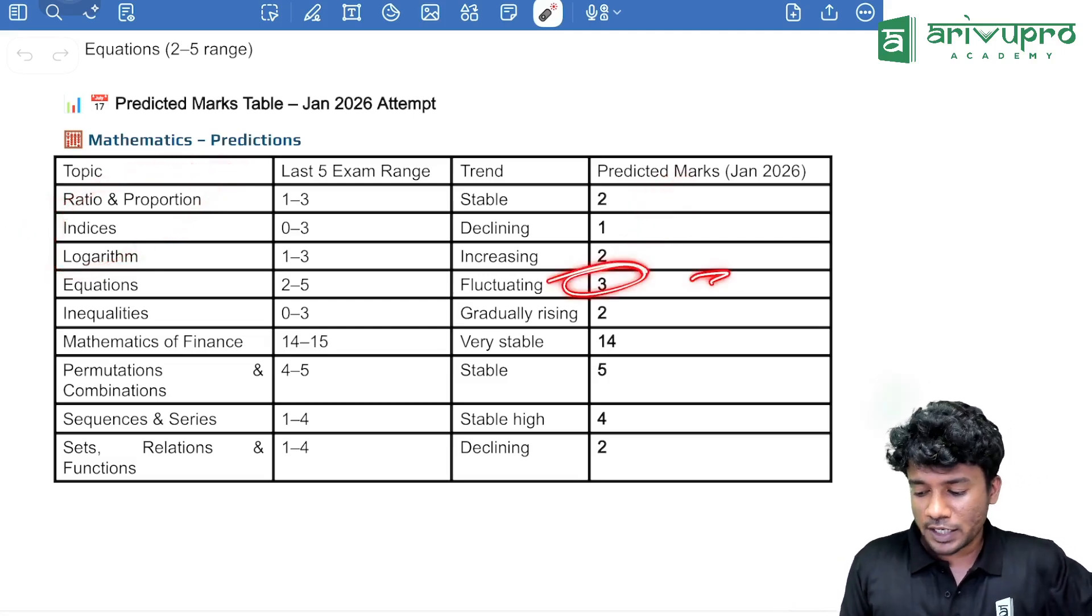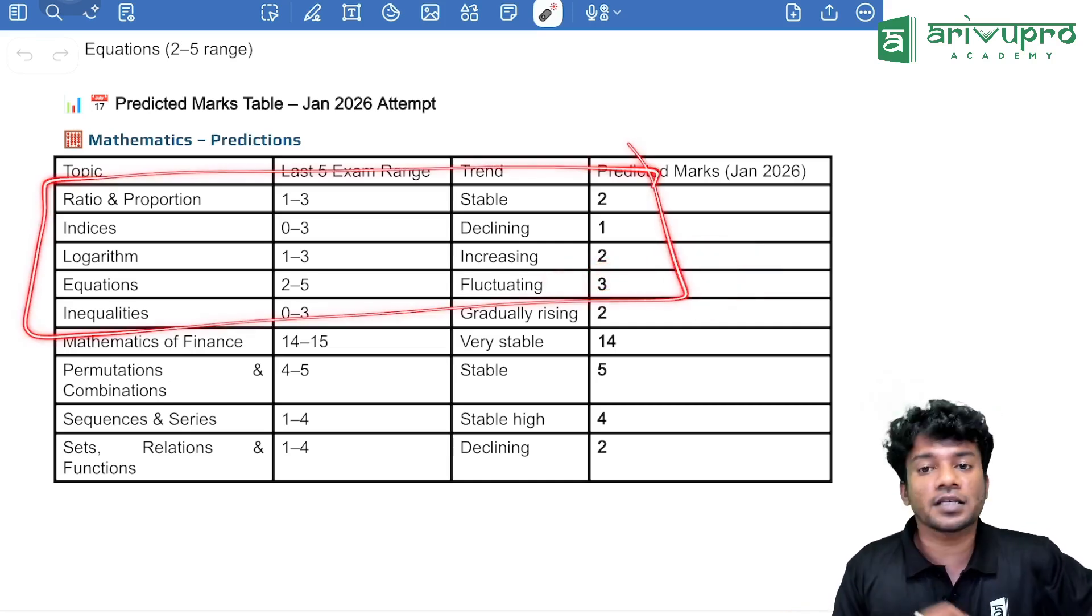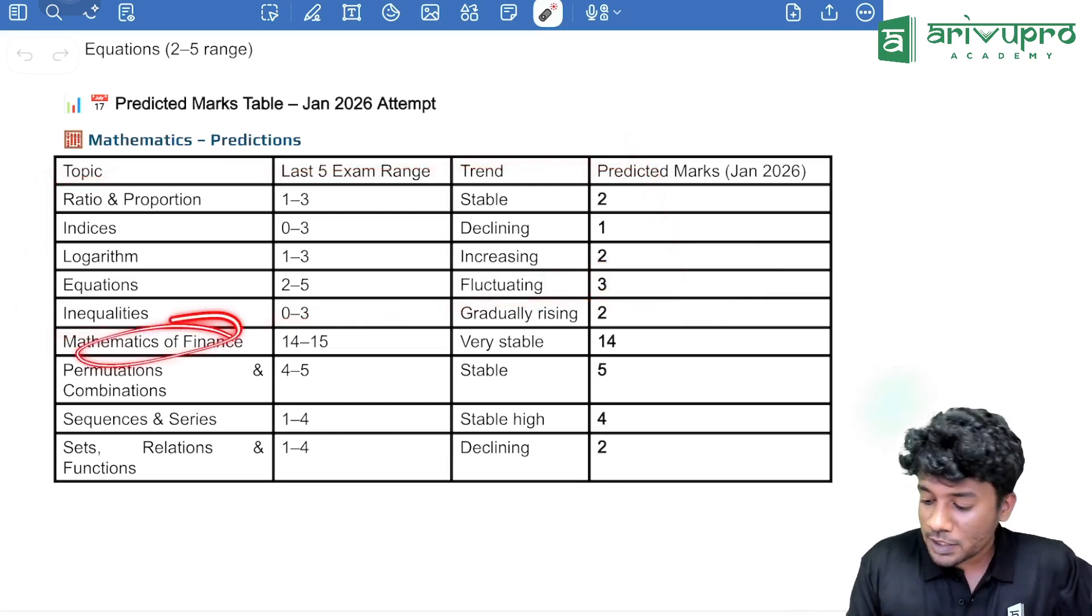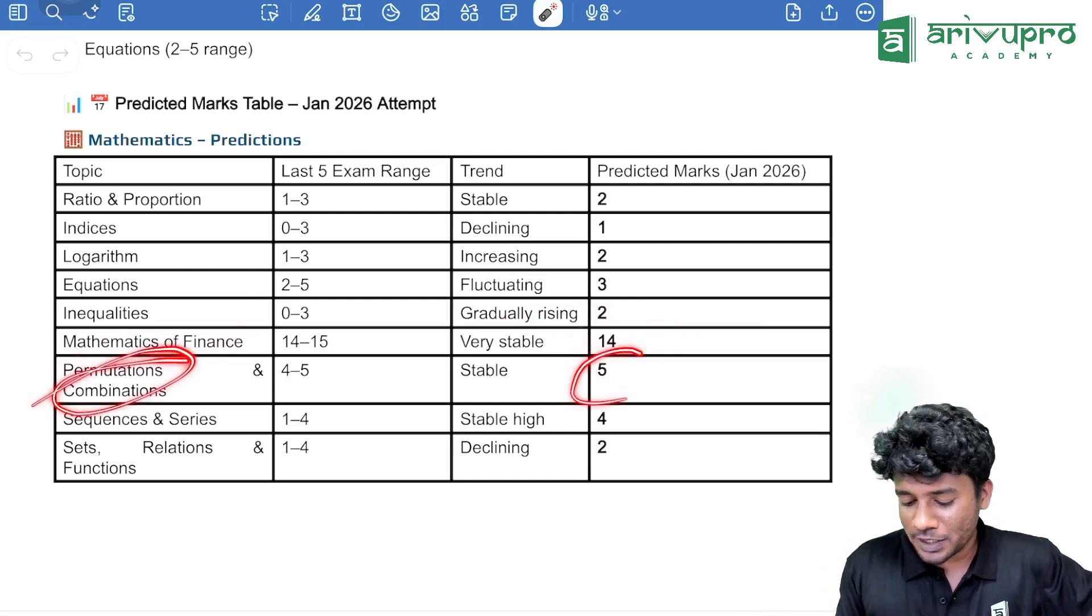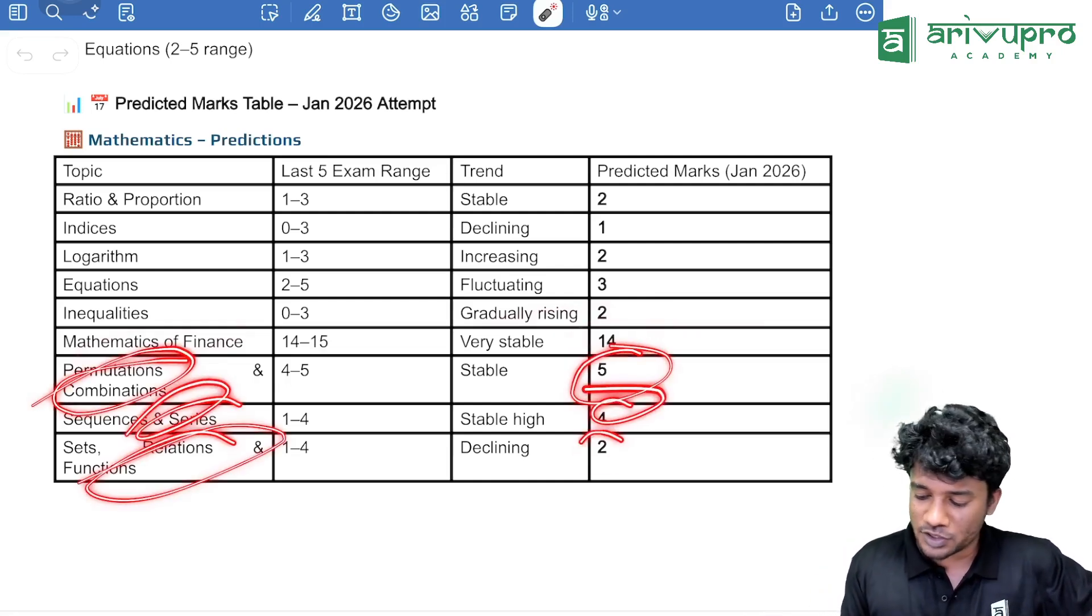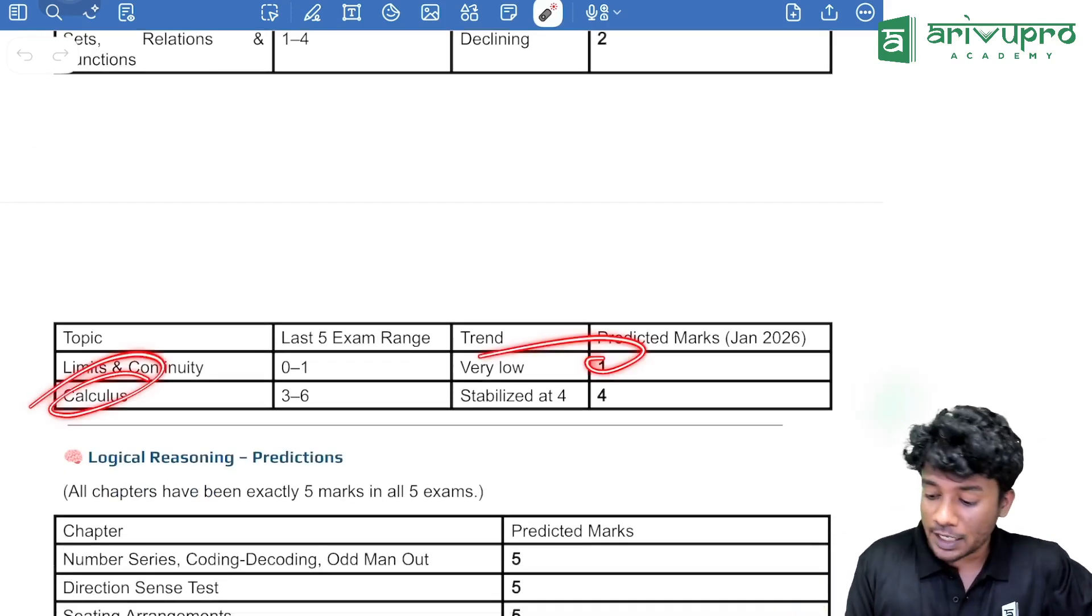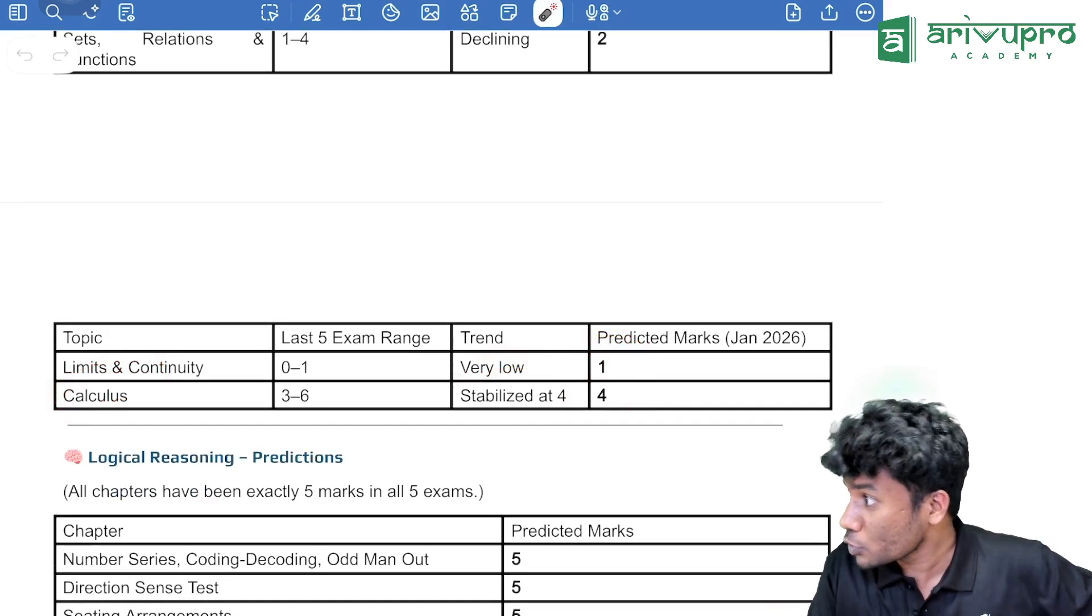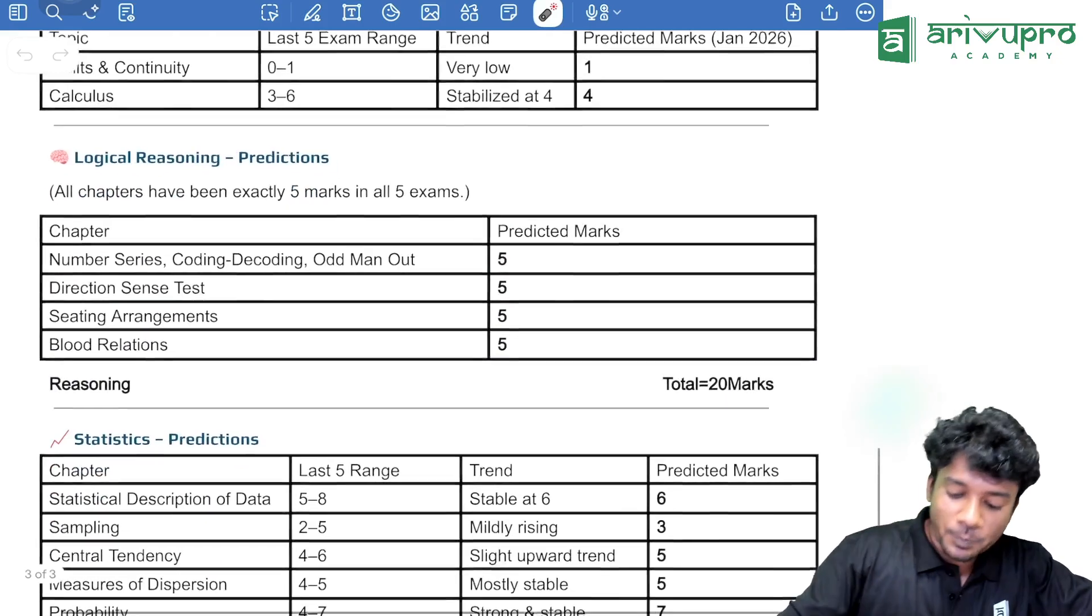Then, chapter 2, we can expect 3 marks. Inequality, we can expect 2 marks. That means, first to 3 chapters, we are expecting that much. Then, coming to mathematics of finance, we are expecting the usual trend of 14. Then, permutation combination 5, sequence and series 4, and set relation function 2. And finally, limits and continuity 1, and calculus 4 marks. This is the usual trend we are expecting from the maths part, mathematics part.